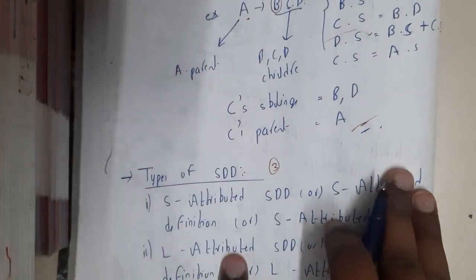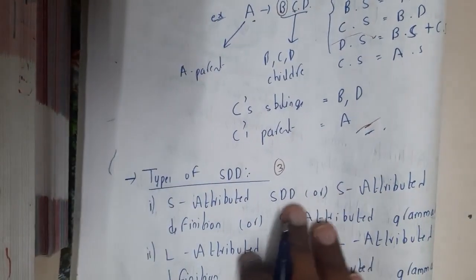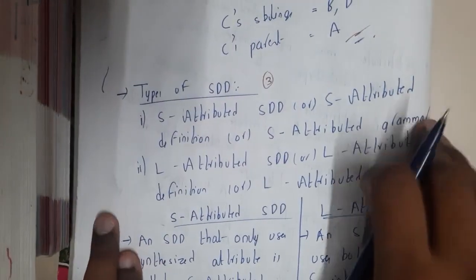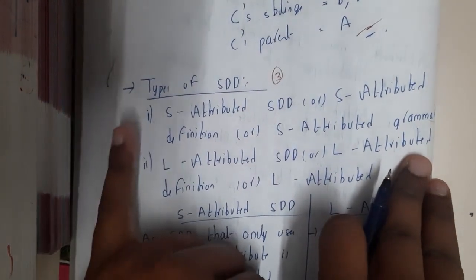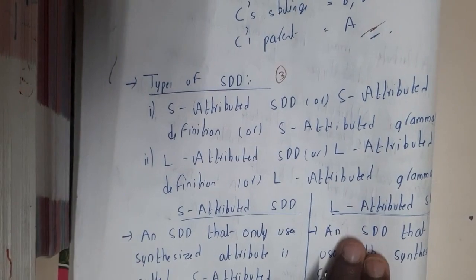I hope everyone got a clear idea on the types of attributes. In the next lecture, we'll be going through the types of SDT - that is S-attributed and L-attributed. Let us meet in the next lecture. Thank you, thanks for watching.